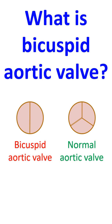A bicuspid aortic valve can have a leak known as aortic regurgitation, a narrowing known as aortic stenosis, or a combination of both. Another important association is aortopathy, or disease of the aorta.